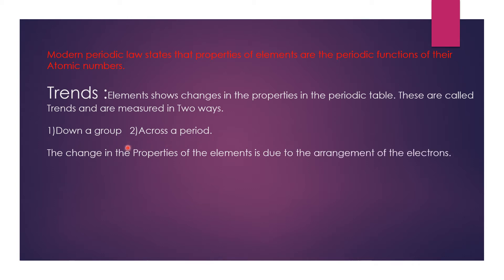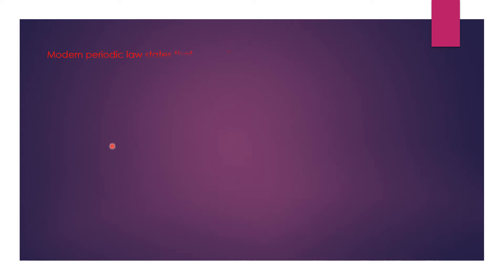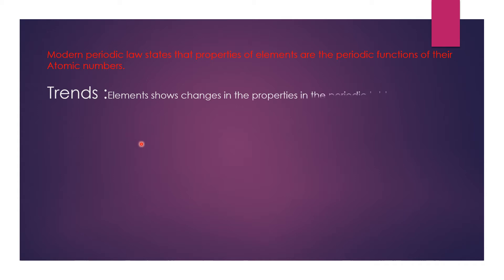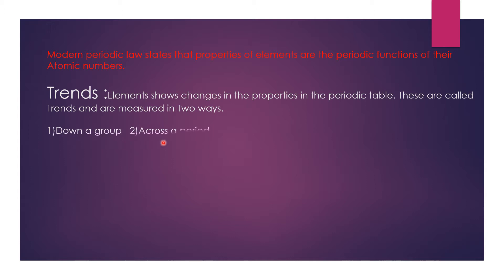Whenever we talk about trends in periods and groups, you have to remember: when you are measuring any property in the groups, you say 'down the group.' And in periods, you say 'across the period from left to right.' So, trends are measured in two ways: one is down a group, and the second one is across a period.